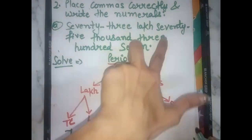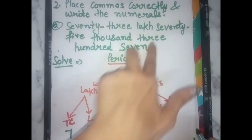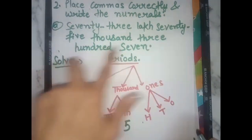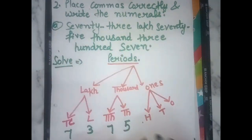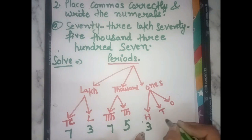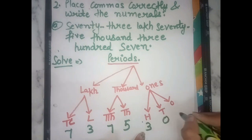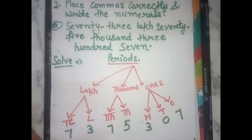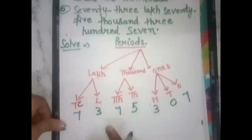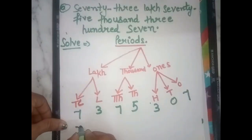Next is 307. Hundreds place gets 3, tens place gets 0, ones place gets 7. So the complete numeral for 73 lakh, 75 thousand, 307 is written out.